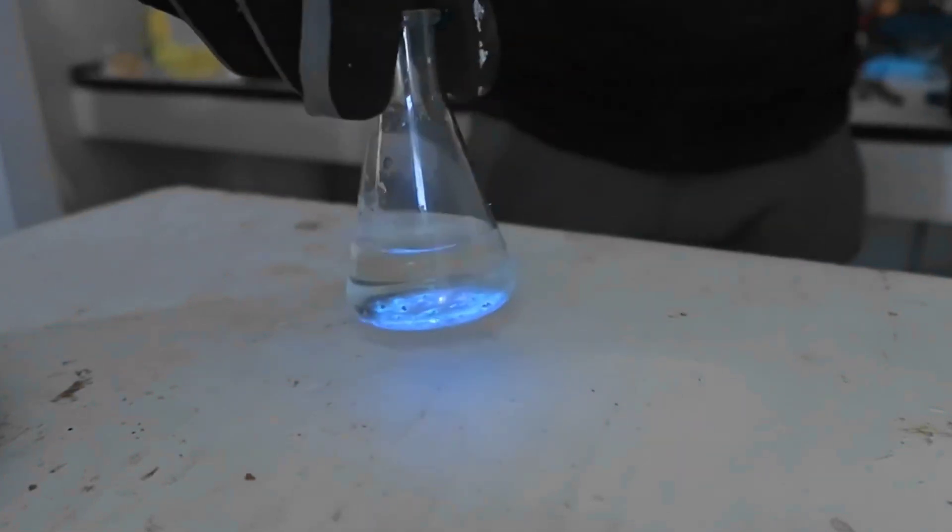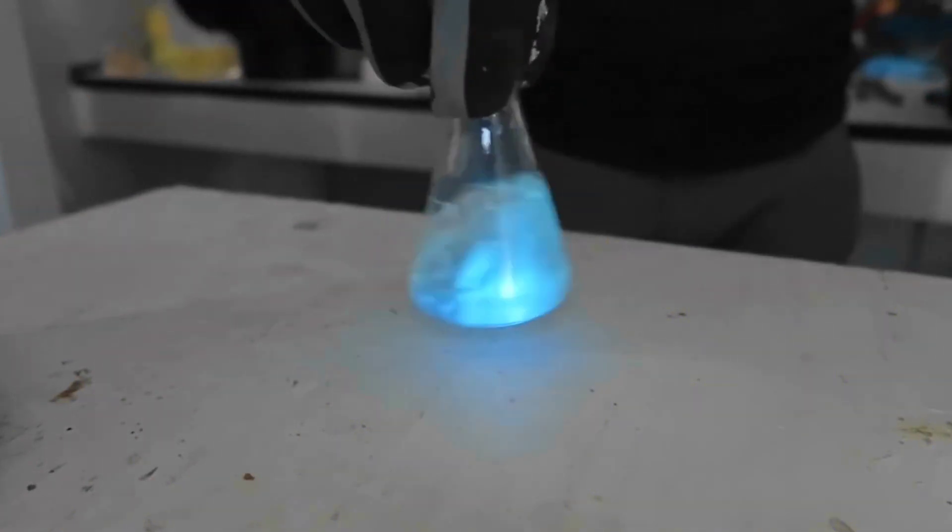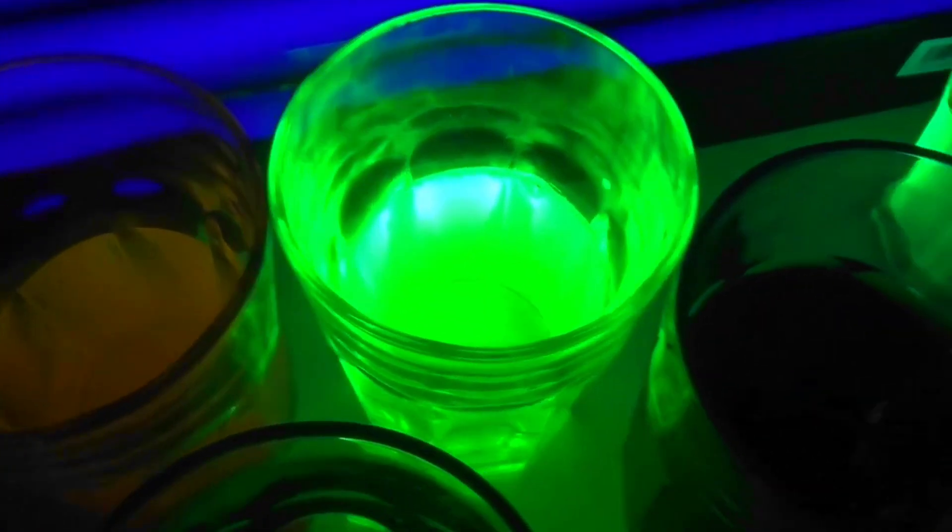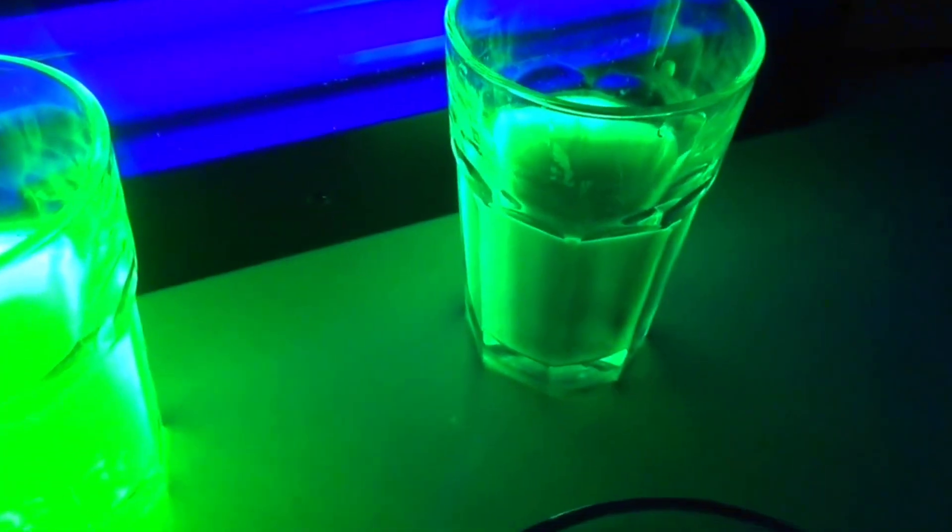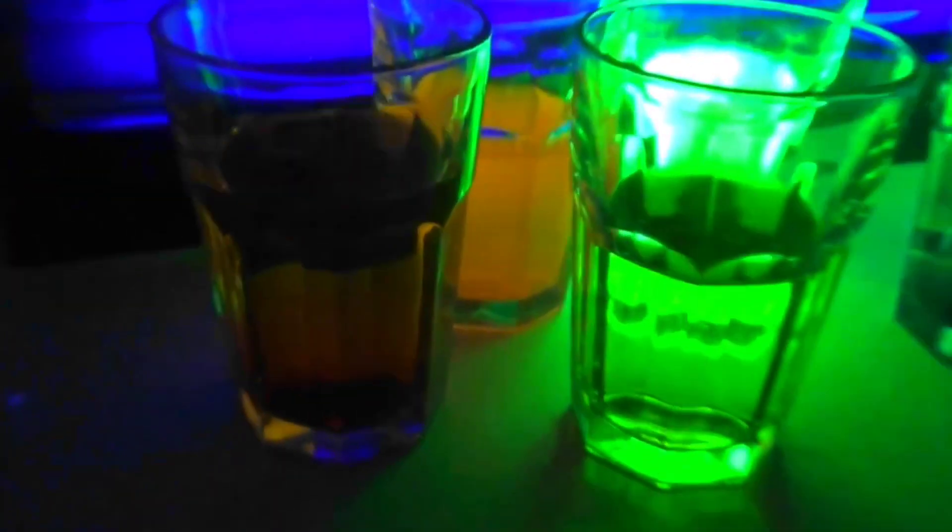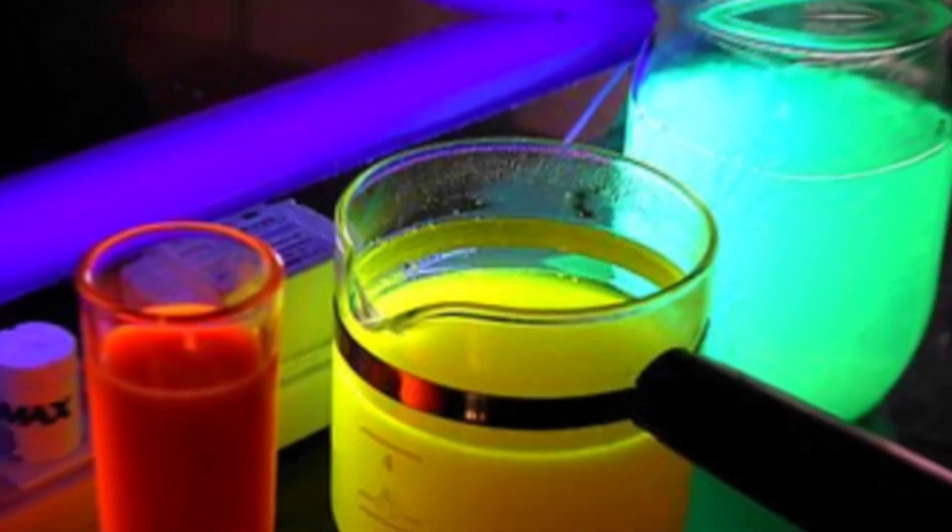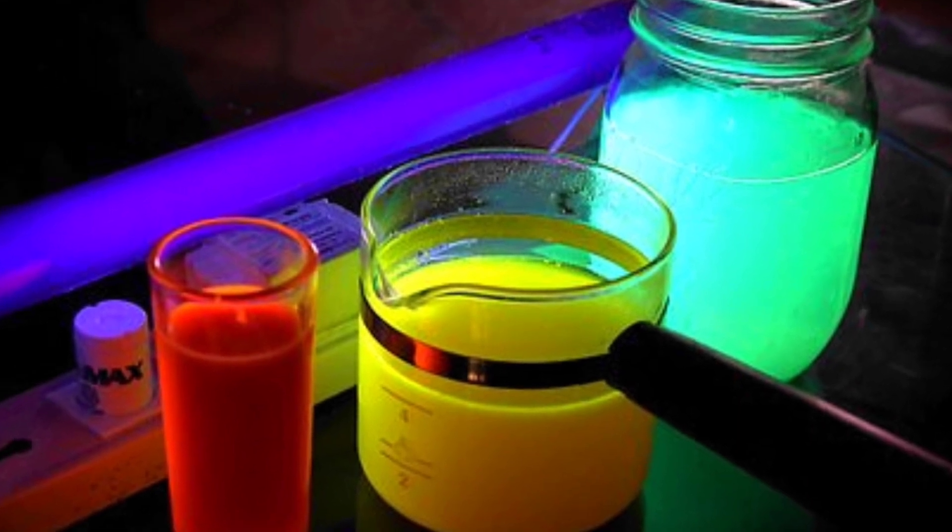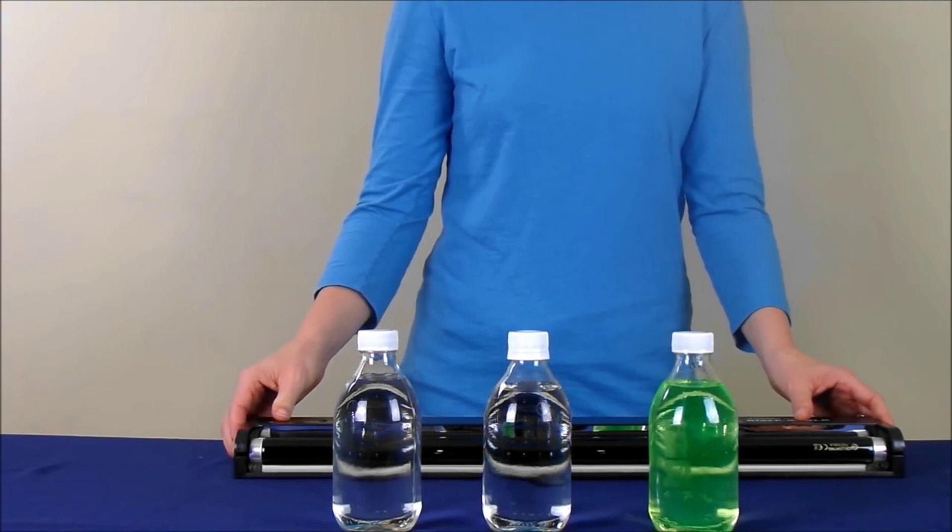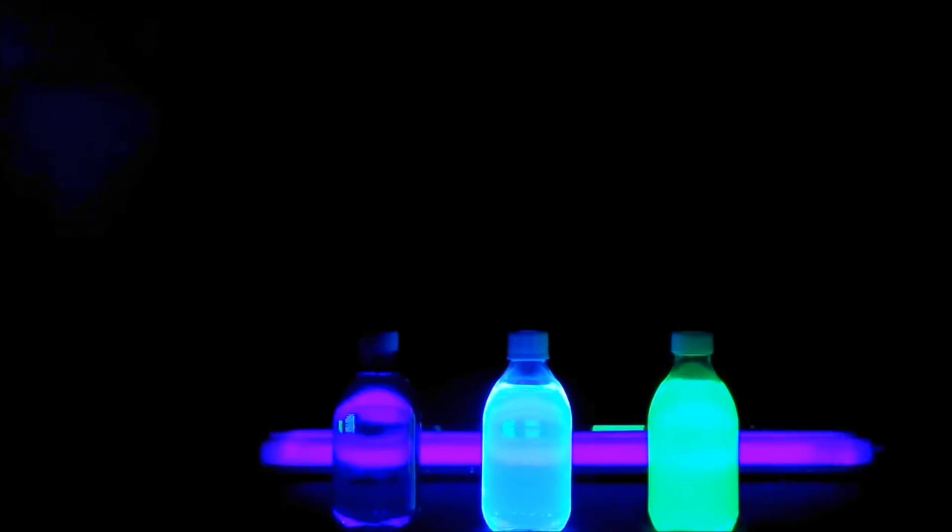Quinine, an ingredient in tonic water, fluoresces under ultraviolet light, causing it to emit a faint glow. Turn off the lights in the room and then shine the black light onto the tonic water. Instantly, the water will glow with an eerie and beautiful blue light. Kids will be fascinated by the glowing effect and may even enjoy experimenting with different amounts of tonic water or using different containers to see how it affects the brightness of the glow. This enchanting experiment provides a unique opportunity to introduce kids to the concept of fluorescence and the fascinating properties of certain substances under ultraviolet light. It's a fun and visually striking activity that will captivate young minds and spark curiosity about the magical world of science.